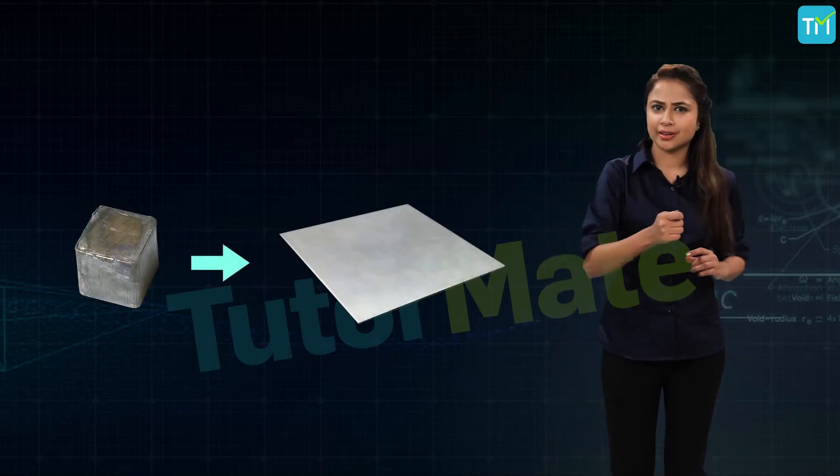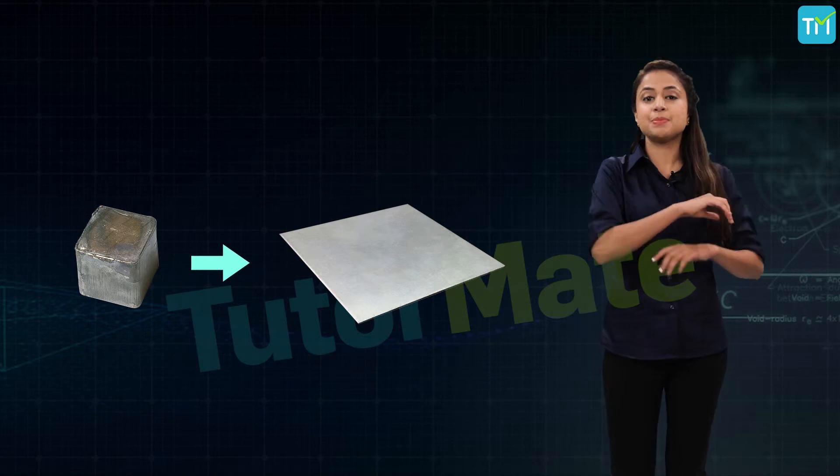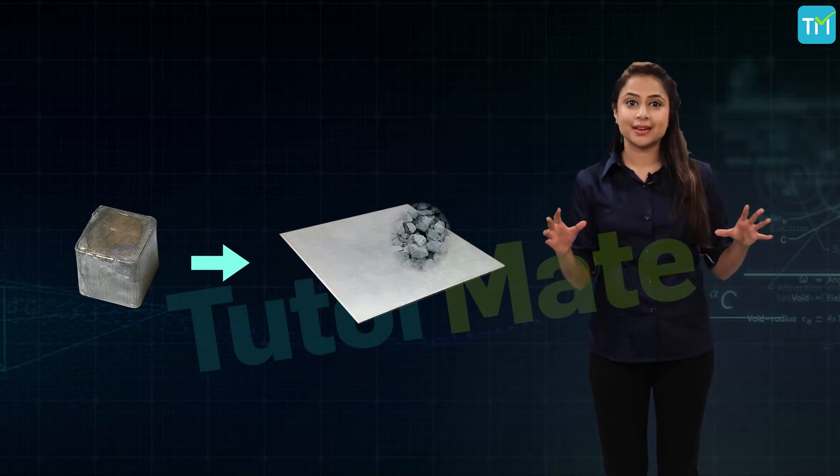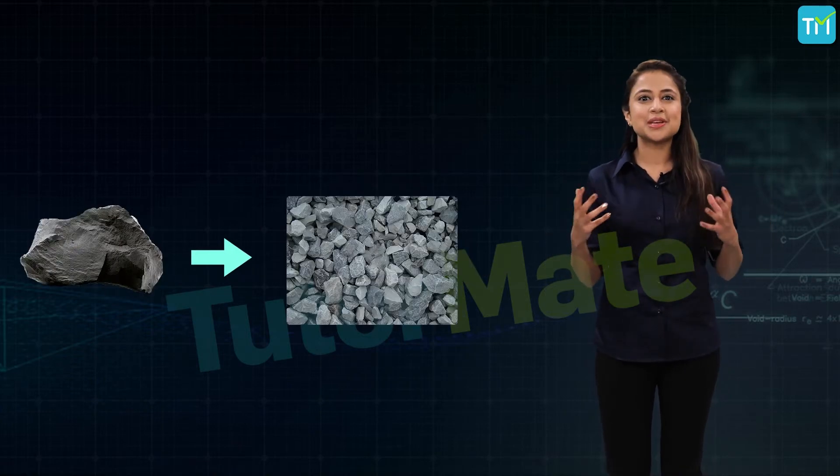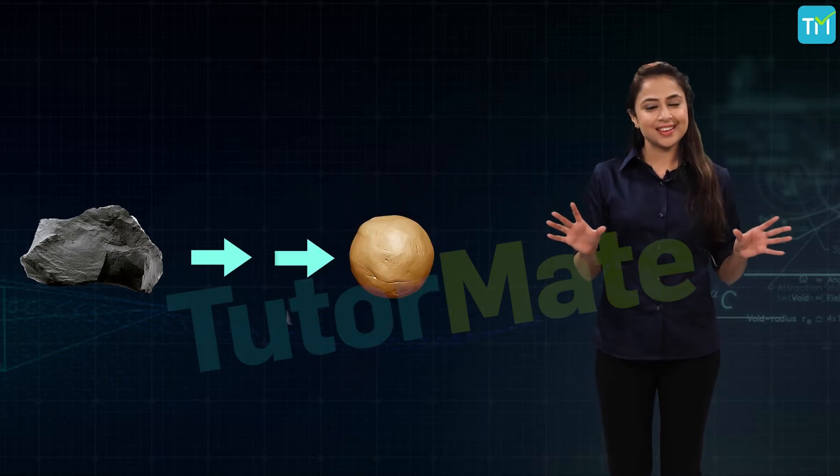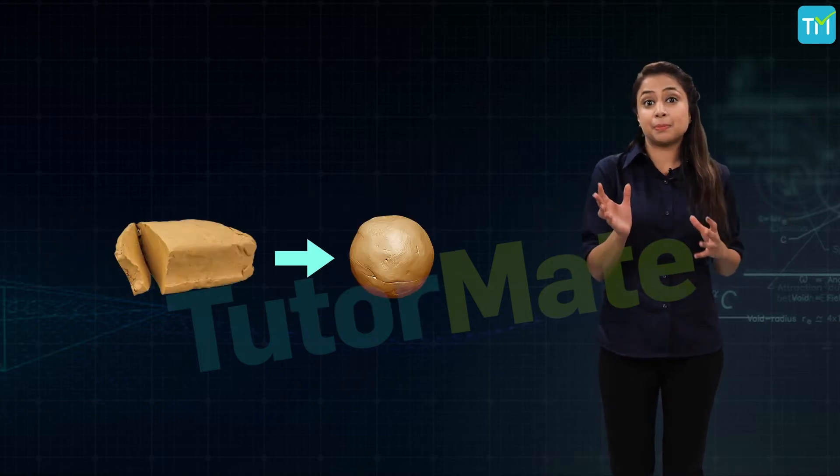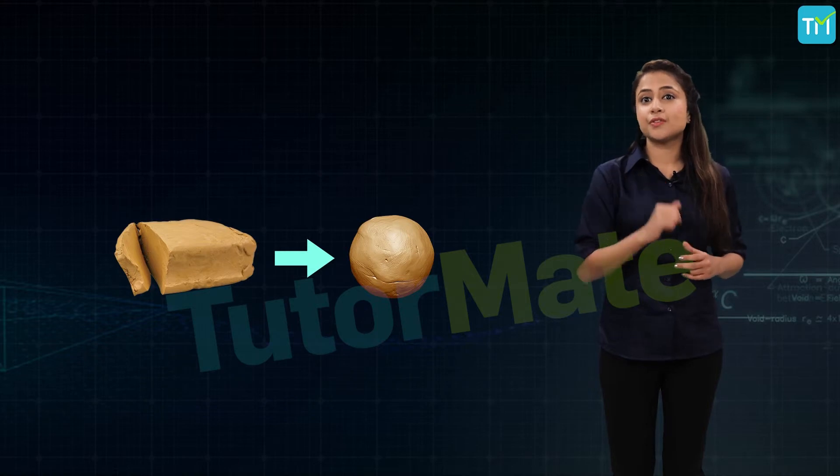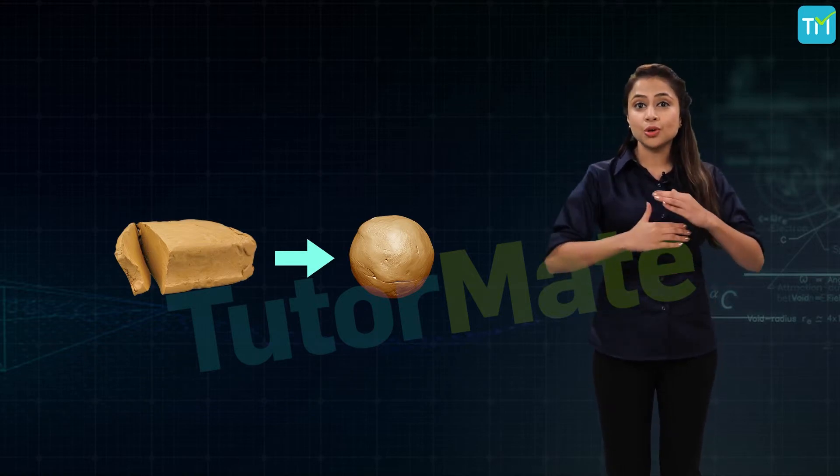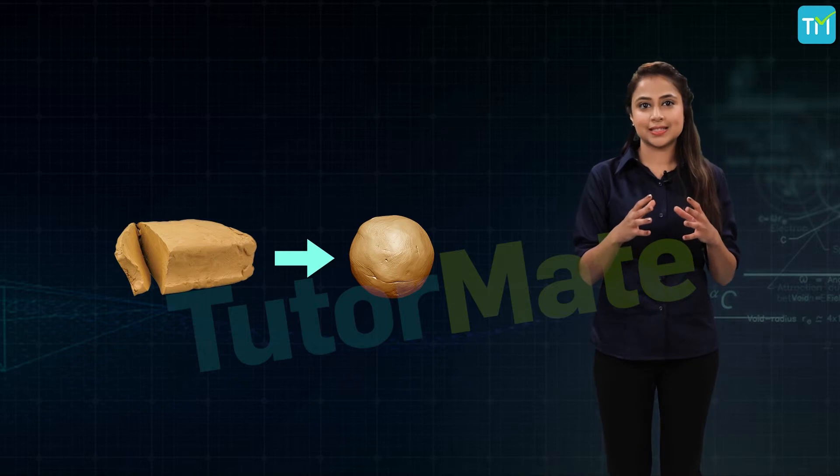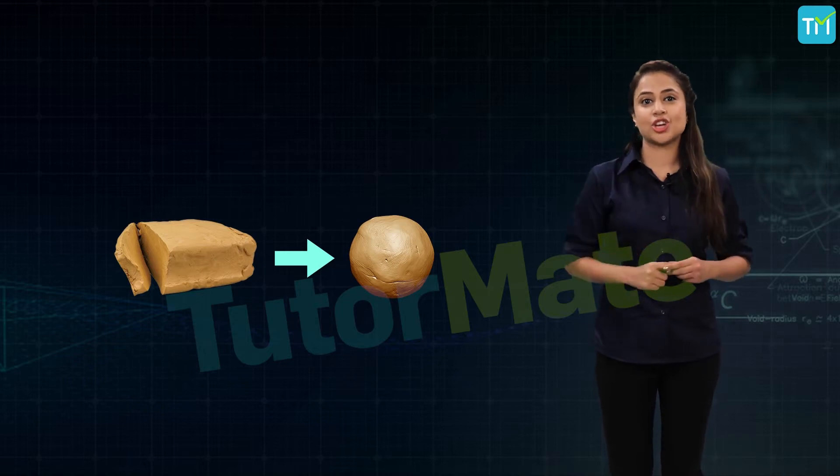For example, by hammering, a block of metal can be turned into a thin sheet. By hammering, a stone can be broken into pieces. If you've ever played with play-doh or clay, you must have experienced that you can roll it into a ball or press it to flatten it, thus changing its shape.